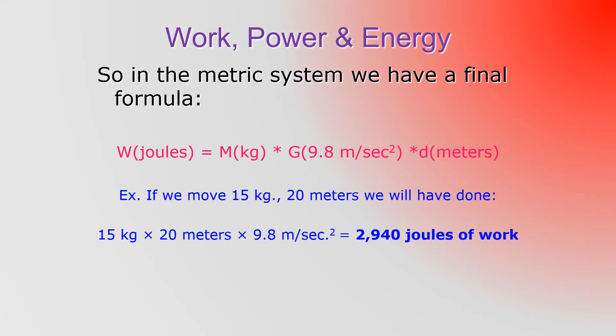So in the metric system we have a final formula. The work in joules is equal to the mass in kilograms times the force due to gravity times the distance the object was displaced in meters. For example, if we move 15 kilograms times 20 meters, we will have done 15 × 20 × 9.8 meters per second squared, or 2,940 joules of work.